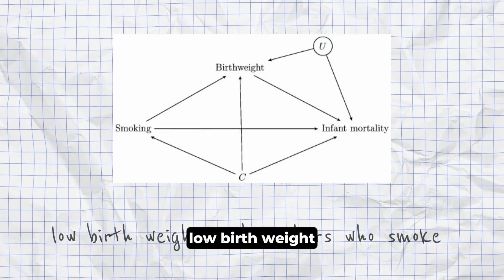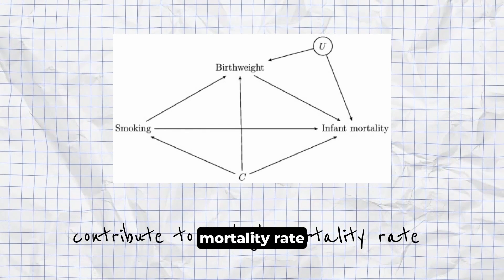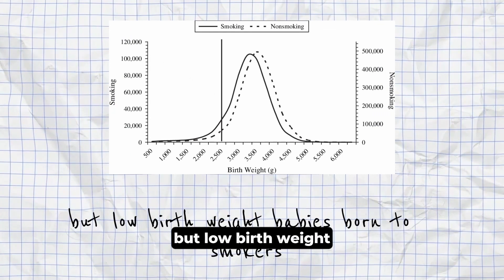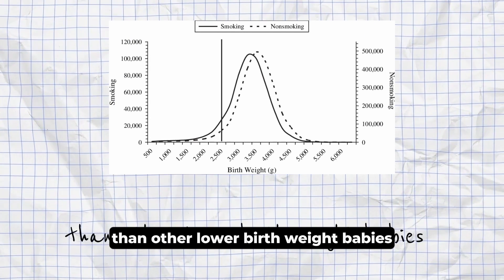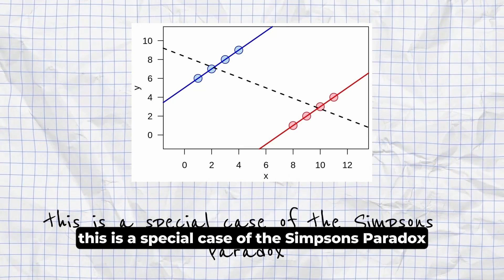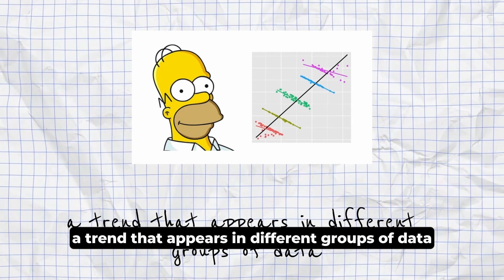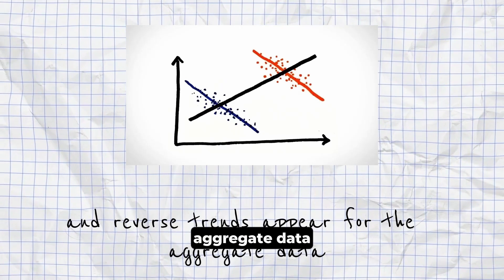Low Birth Weight Paradox. Low birth weight and mothers who smoke contribute to a high mortality rate. Babies of smokers have lower average birth weight, but low birth weight babies born to smokers have a lower mortality rate than other lower birth weight babies. This is a special case of the Simpson's Paradox.